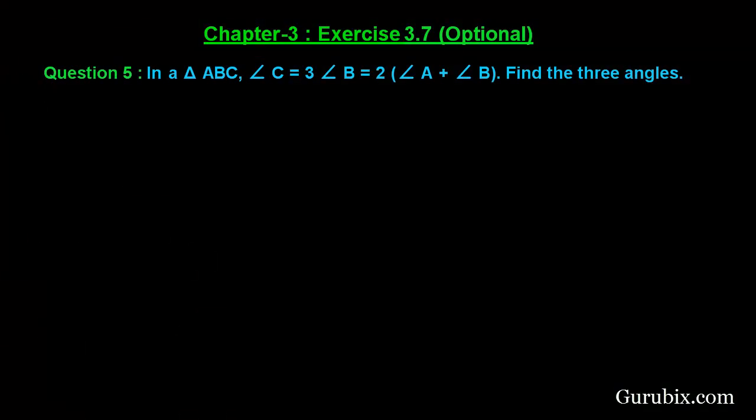Welcome friends. Let us solve the fifth question of exercise 3.7 of chapter 3. The question says: in a triangle ABC, angle C is 3 times angle B, and angle C equals 2 times of angle A plus angle B. Find the three angles. So let us see how to solve this question. Let angle A equal x degrees.